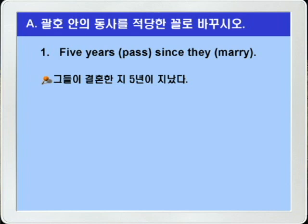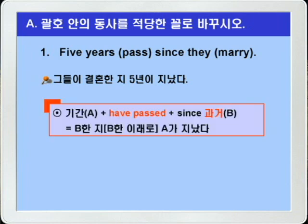이런 식으로 표현하면 되는데, 이 문제의 핵심은 바로 since가 가지고 있습니다. since는 '~이래로' 이런 의미일 때는 since절에는 과거, 주절에는 현재완료가 쓰입니다. 그래서 '기간 + have + p.p. + since + 과거' 이런 식으로 쓰는데, 기간을 A라고 하고 since 때의 과거를 B라고 한다면, 'B한 지 A가 지났다' 혹은 'B한 이래로 A가 지났다' 이렇게 해석합니다.